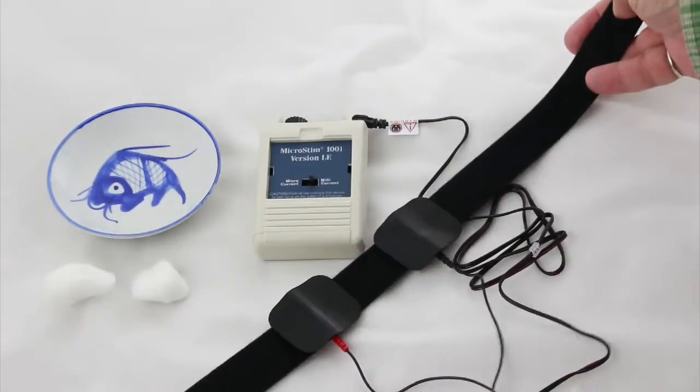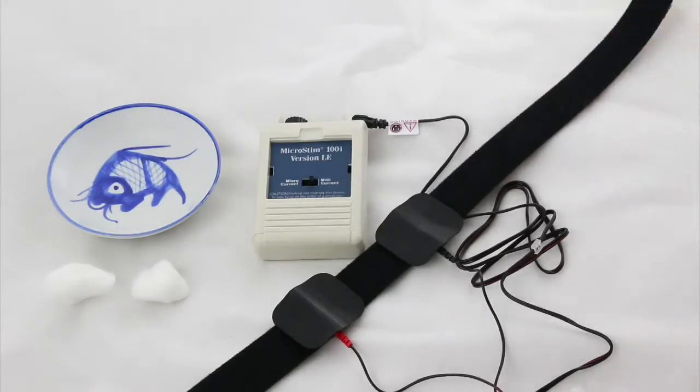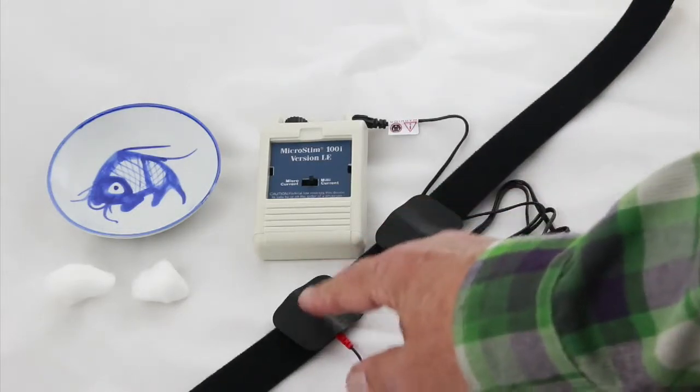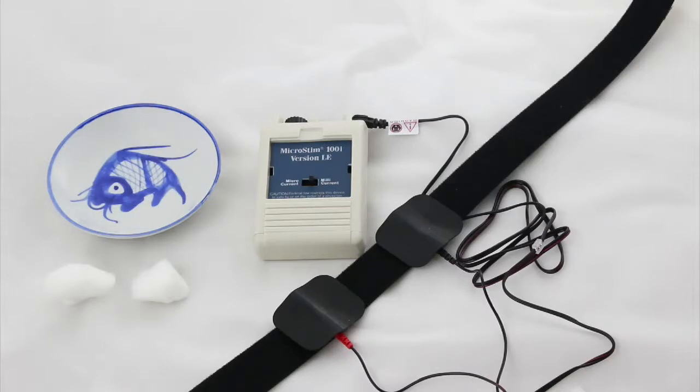One of the things you need to do here, though, is to make a connection. You need to put something wet, either a gel or something between you and your body, your skin, and these electrodes.